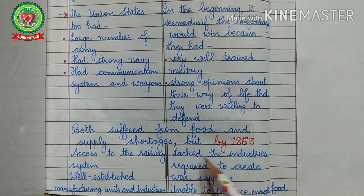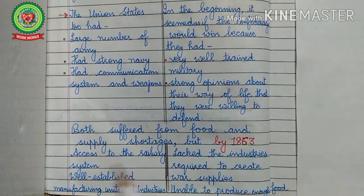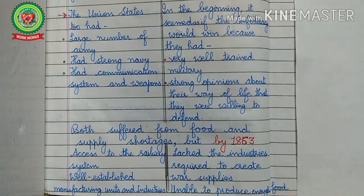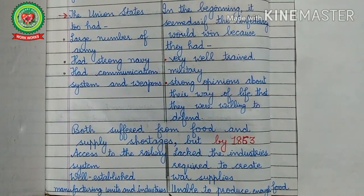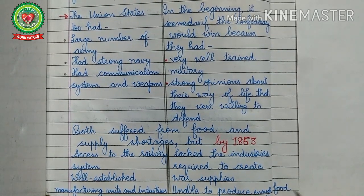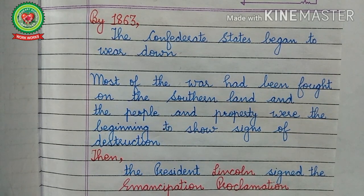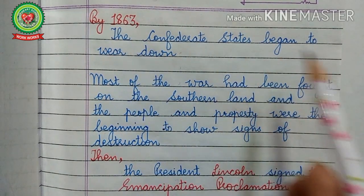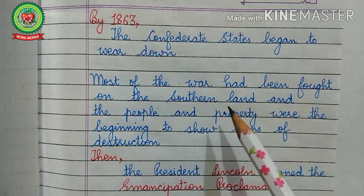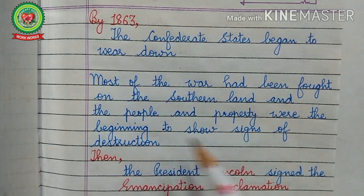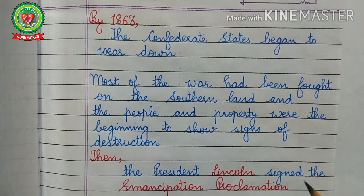The Confederate states lacked the industries required to create war supplies, while the Union states were well established with manufacturing units. Numerous battles were fought, but fortune kept fluctuating with neither side able to dominate the other completely. By 1863 the Confederate states began to wear down; most of the war had been fought on southern land, and people and property were beginning to show signs of destruction. After that, President Lincoln of the Union states signed the Emancipation Proclamation.